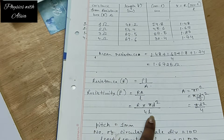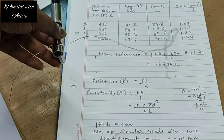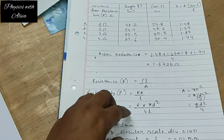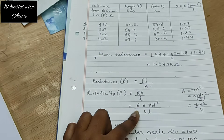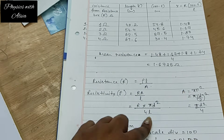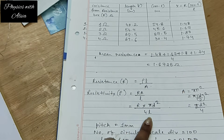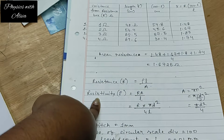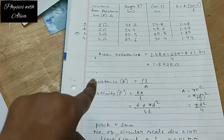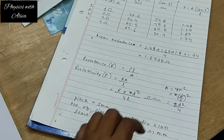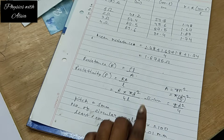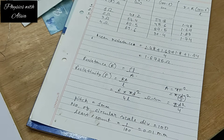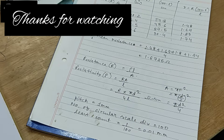We put the value of the diameter into the resistivity formula, and we measure the length of the resistance wire using a meter scale. We already calculated the value of resistance, so after calculating all values we get the resistivity, which is our aim. The other name for resistivity is specific resistance — so the question may mention either term. The unit of resistivity is ohm centimeter. If you have any doubts, ask in the comment section. Thank you for watching — please like, share, and subscribe.